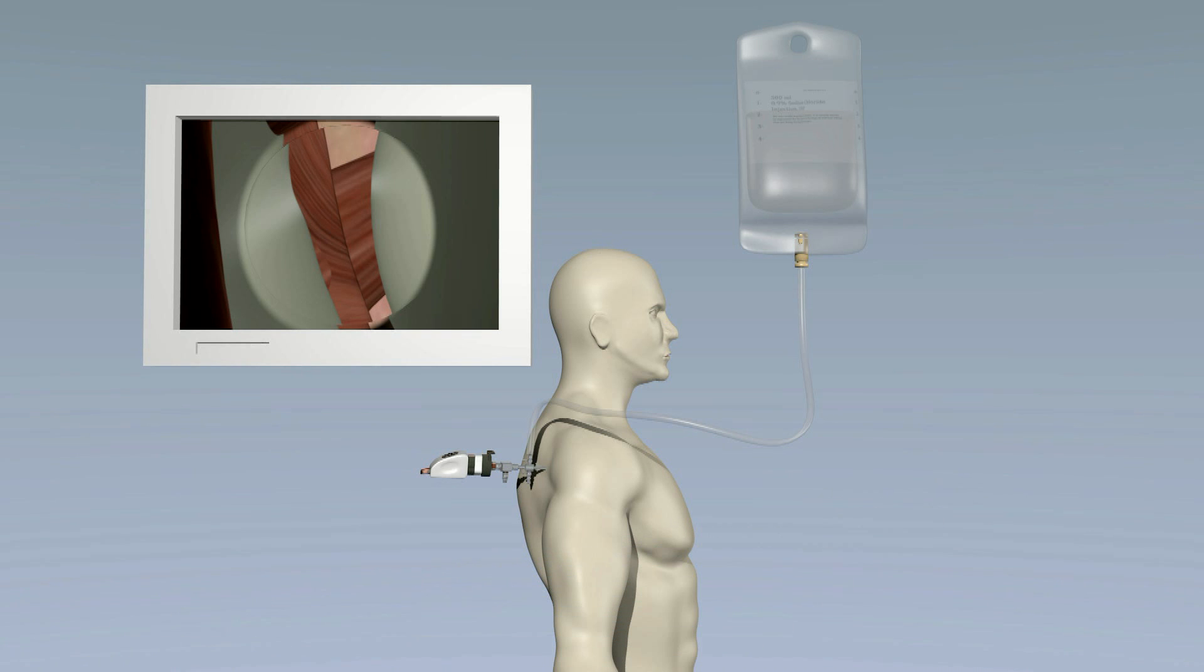A grasper can be used to grasp debris that is floating in the shoulder, such as small pieces of loose cartilage.